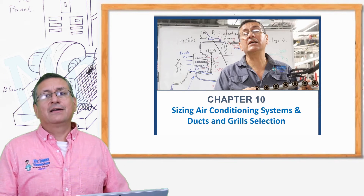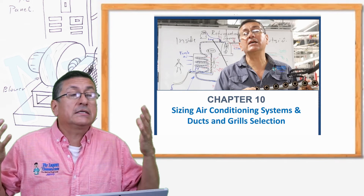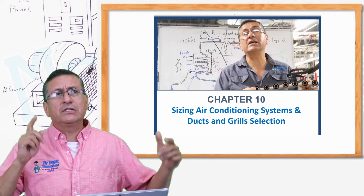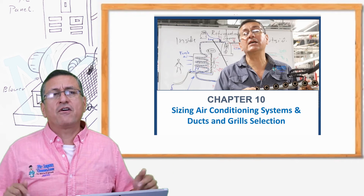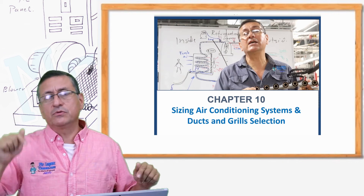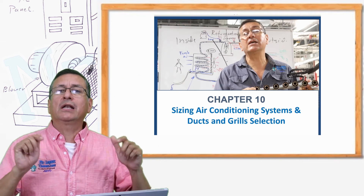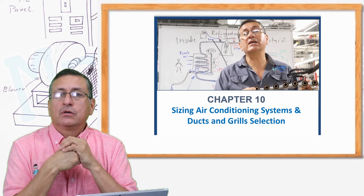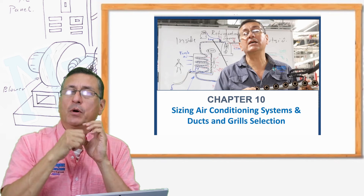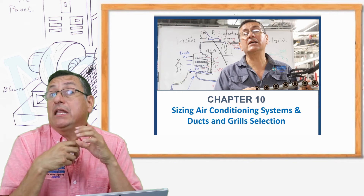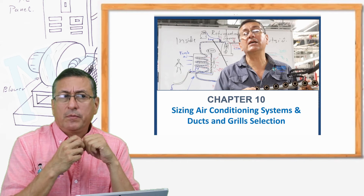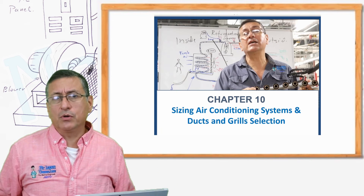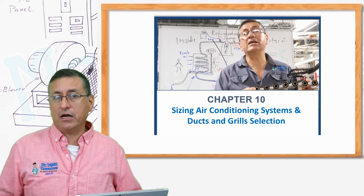Chapter 10 is wonderful — it's how to size an air-conditioned equipment. Given the dimensions of your boat, the structure, and the material, we are going to calculate what capacity in BTUs is required for the air conditioning in your boat. We are also going to determine how many air-conditioned units are recommended — probably one, two, three, or five — depending on the configuration of the boat, and where those units should be located.